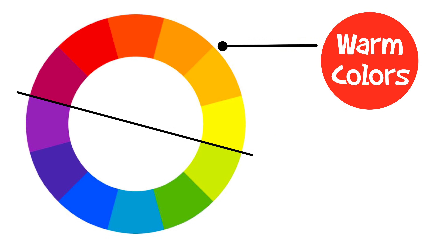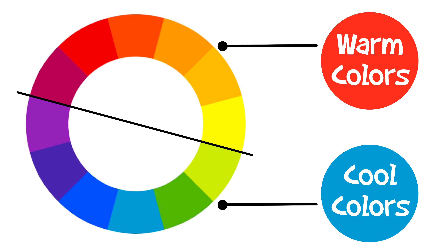Color temperature plays a super important role in choosing the right color to start out with. There are warm colors and there are cool colors. Generally speaking, reds, oranges, and yellows are warm colors, while blues, greens, and violets are cool. Color temperature can be a lot more complicated than this simple illustration, but I'm keeping this video simple so everyone can understand.